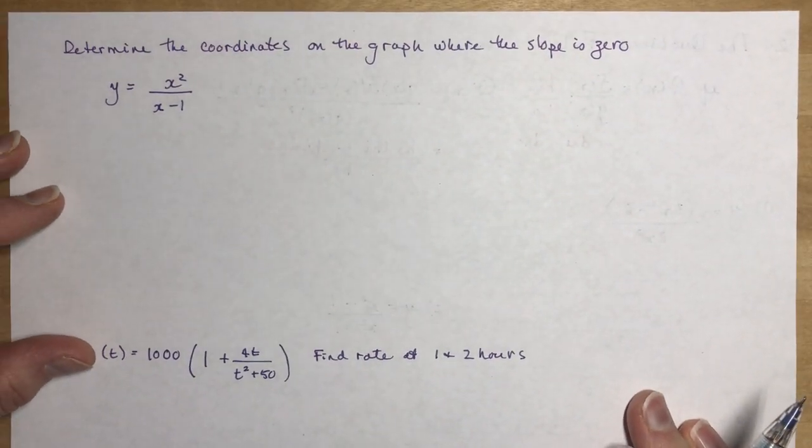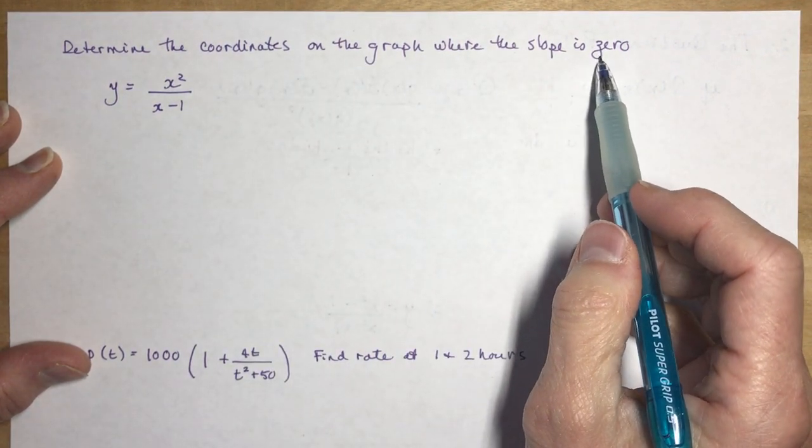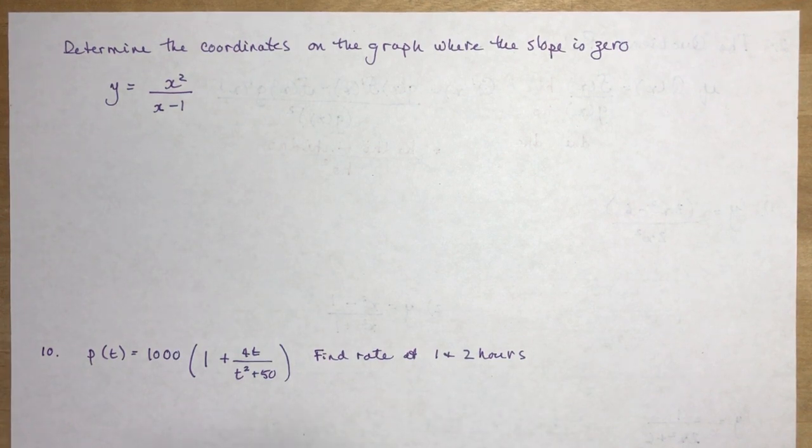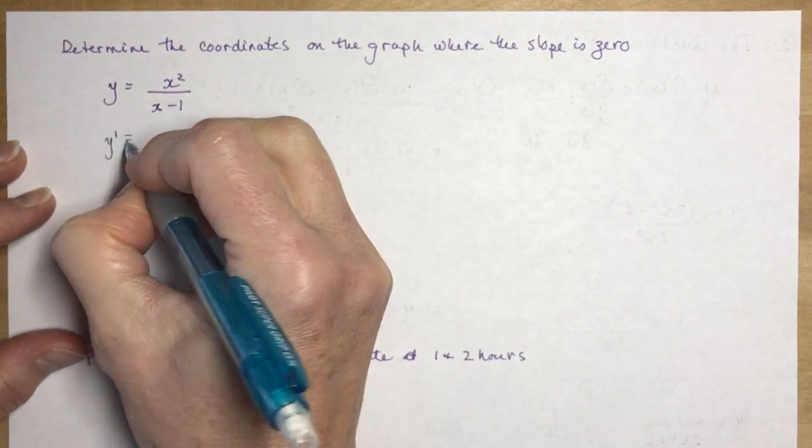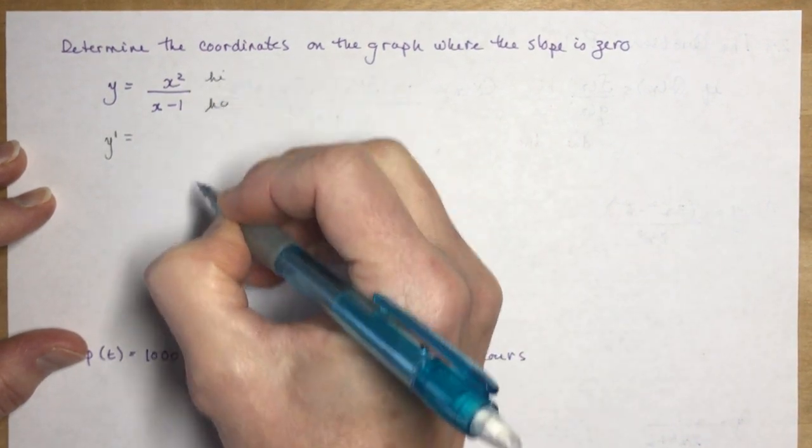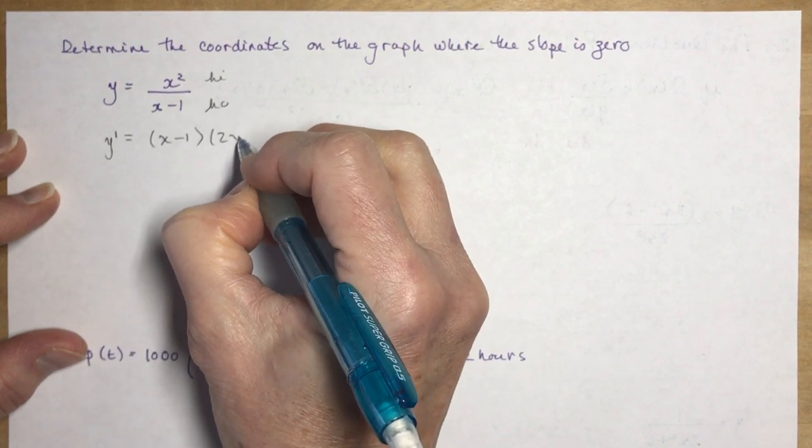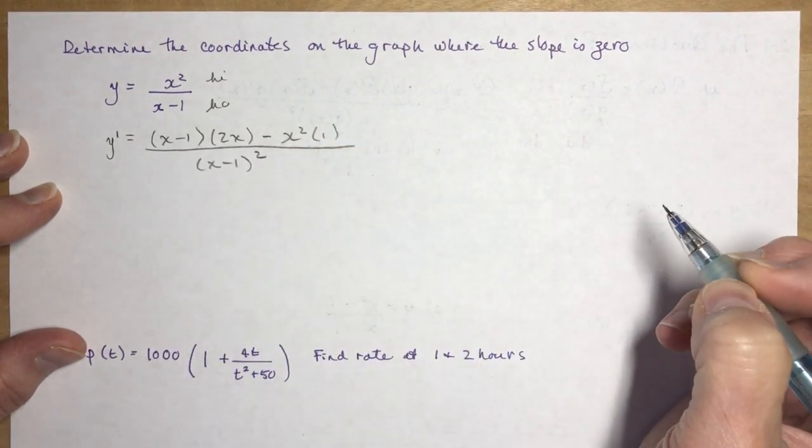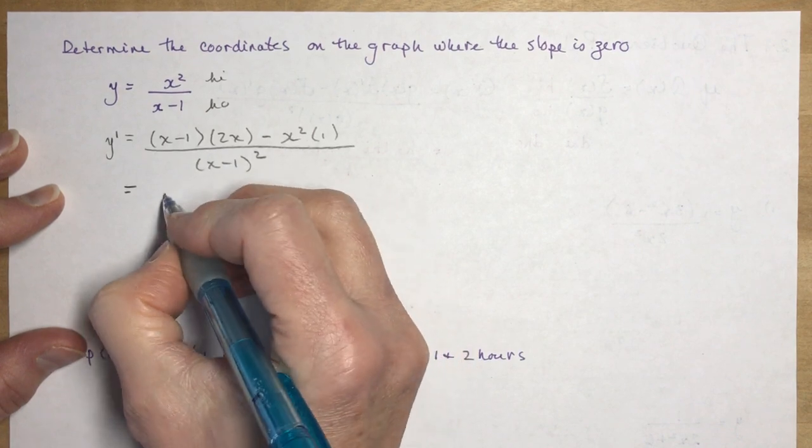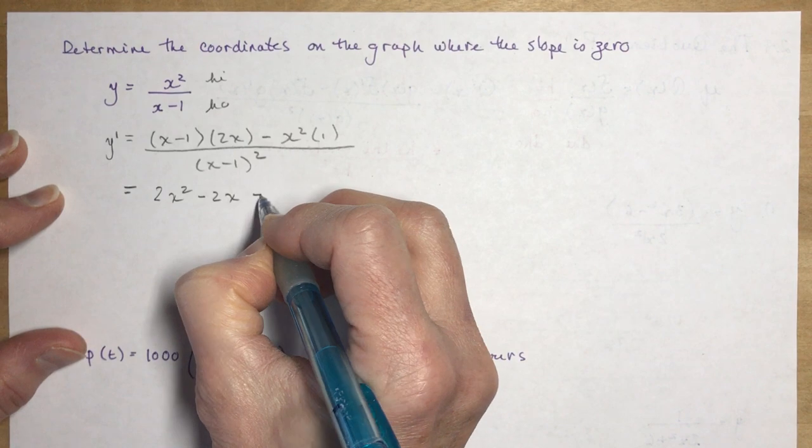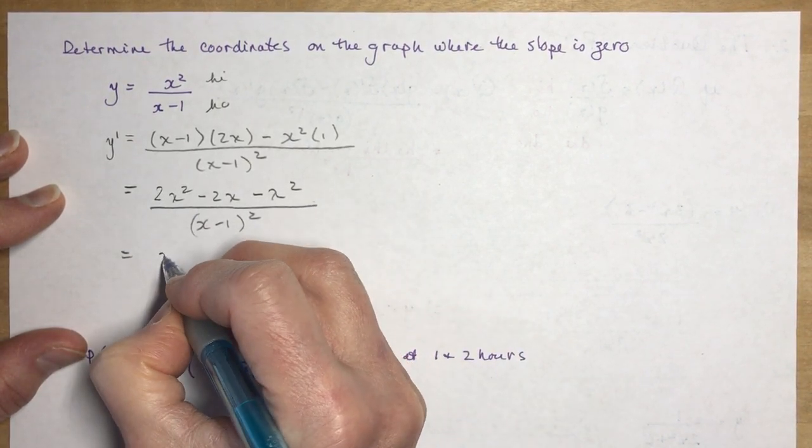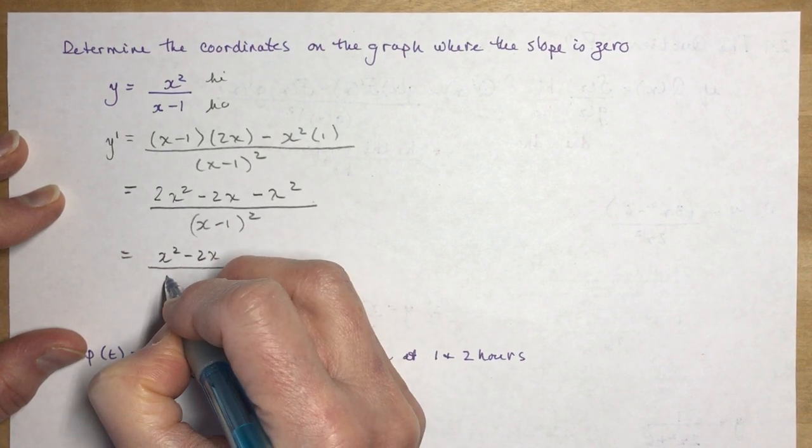Let's do some other types of calculations. Determine coordinates on the graph where the slope is 0. We're talking slope, so we need a slope function, and in calculus, take the derivative. For the given function, we're going to take the derivative y prime using ho-di-hi. Ho d-hi minus high d-ho over ho squared. Simplifying gives me (x² - 2x)/(x - 1)².